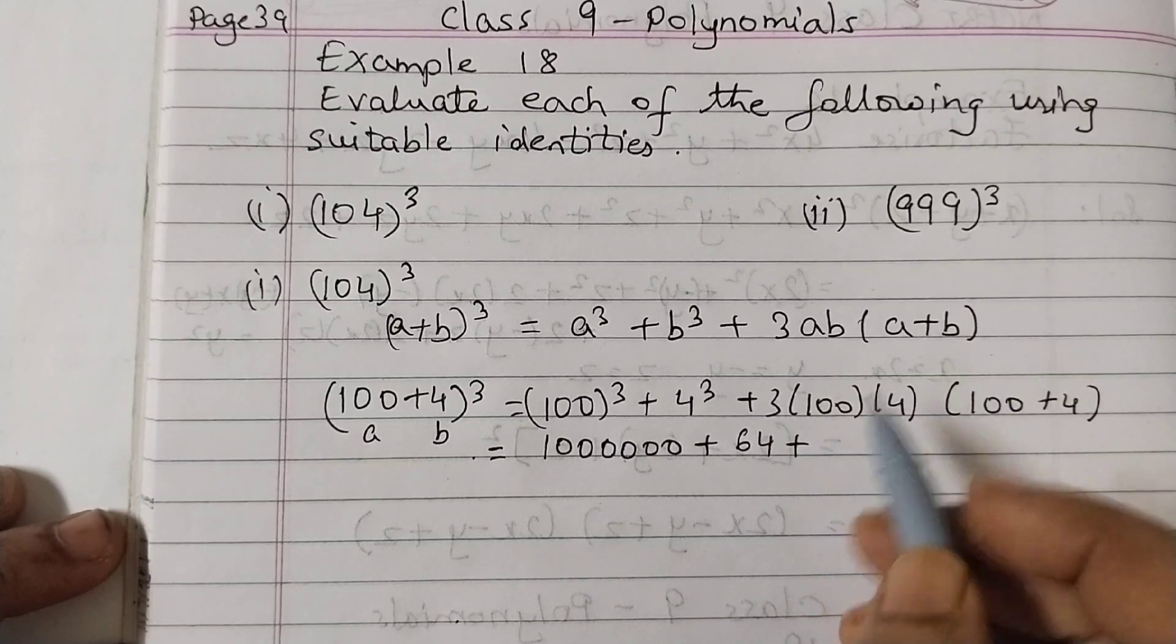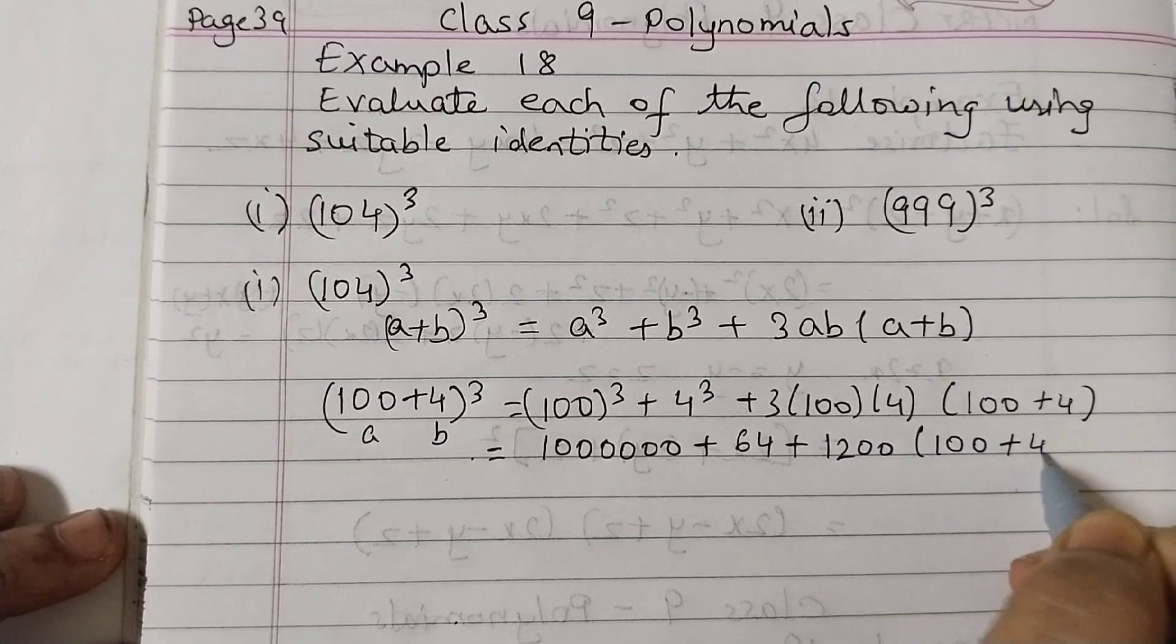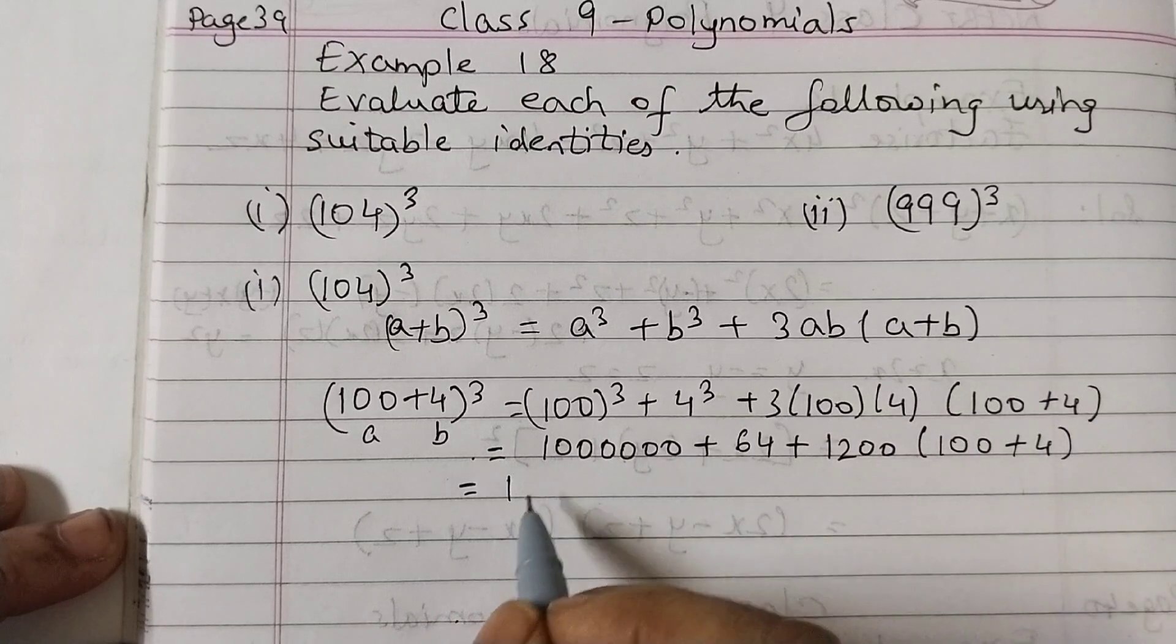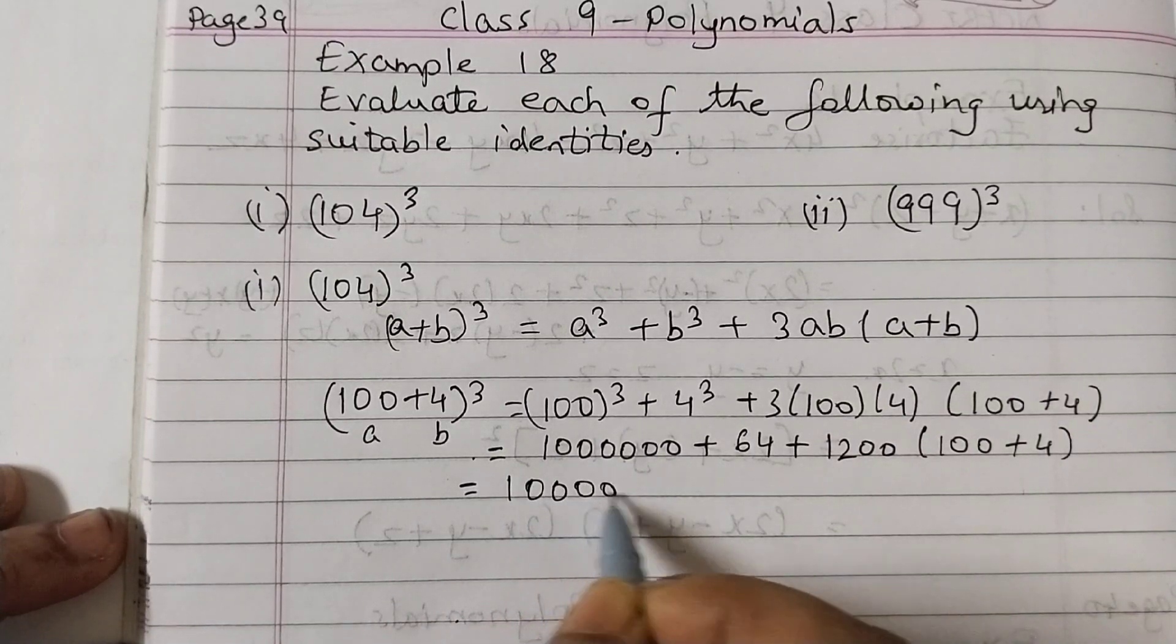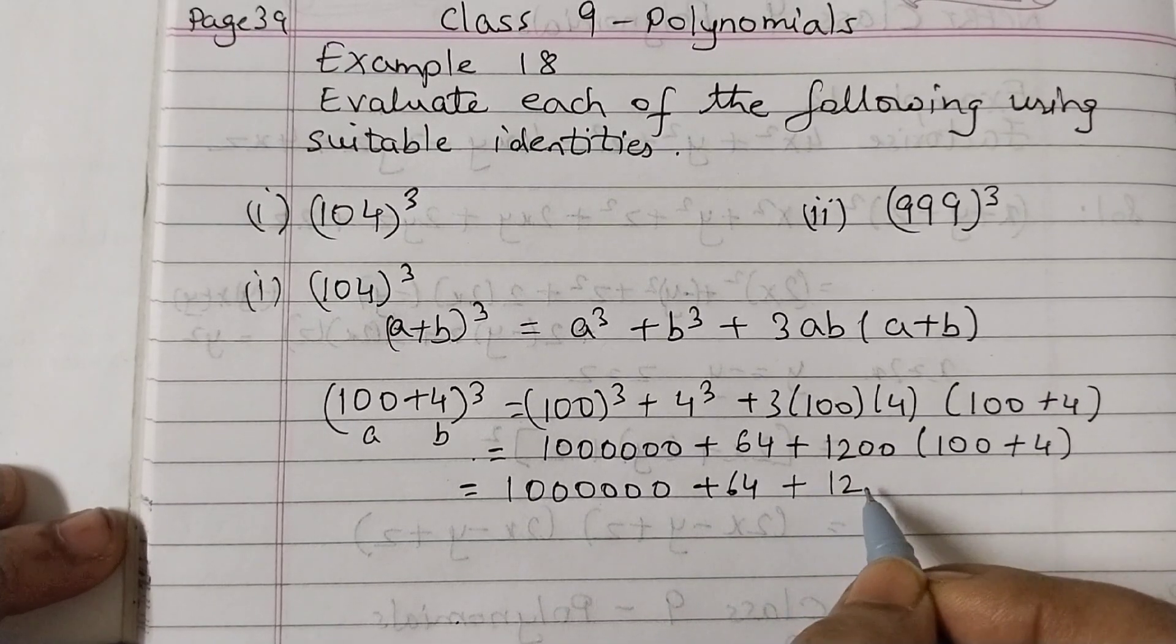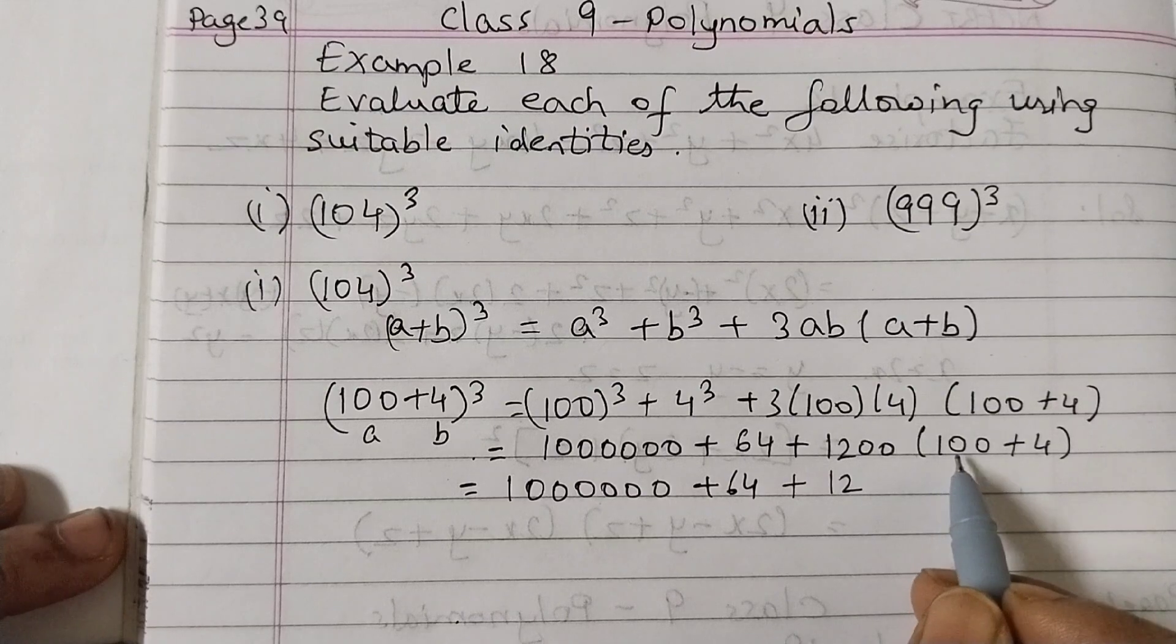Plus here 3 terms are multiplied, 3 into 100 into 4. So 3 times 4 is 12, 12 into 100 is 1200. And inside we have 100 plus 4, we are going to open up the bracket now.